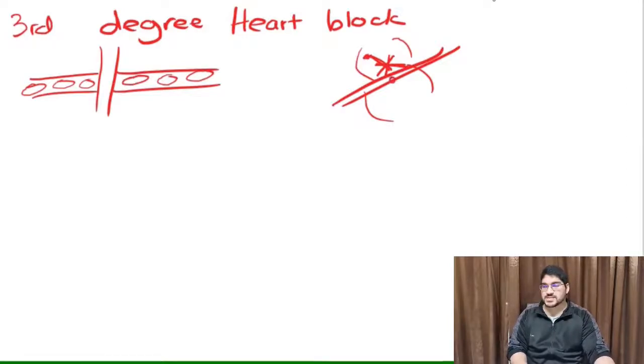What happens is usually the AV node takes over. Now the AV node is releasing impulses to contract the ventricles. But the SA node keeps firing.